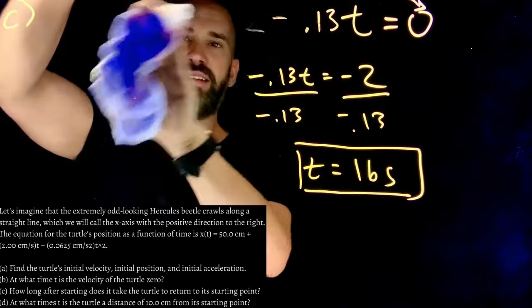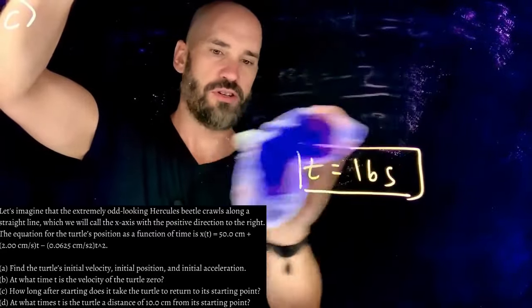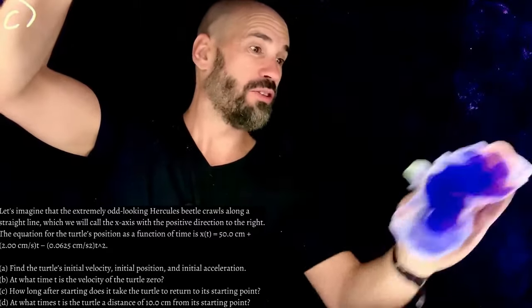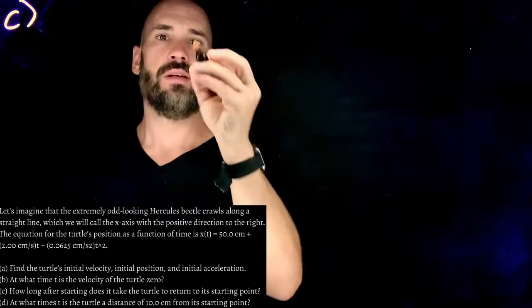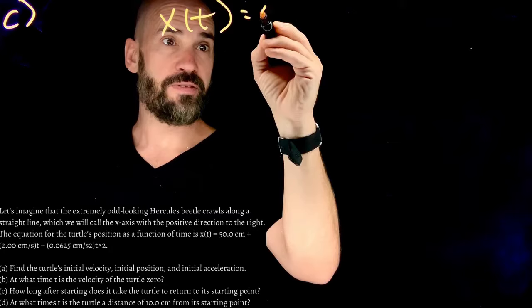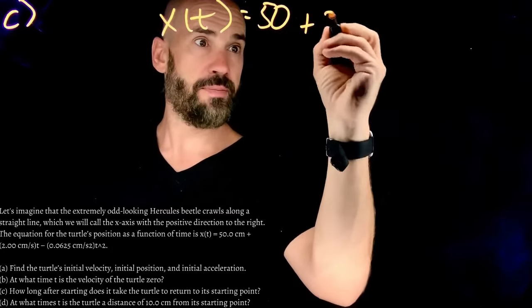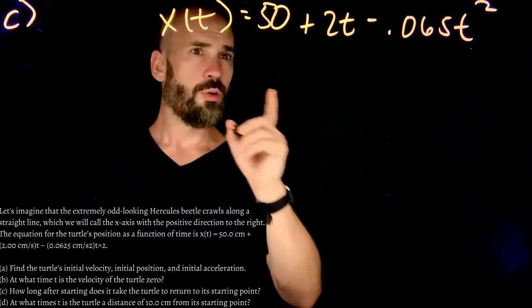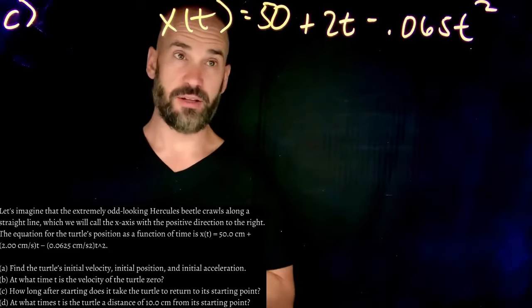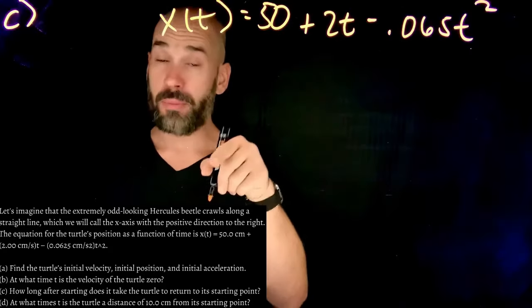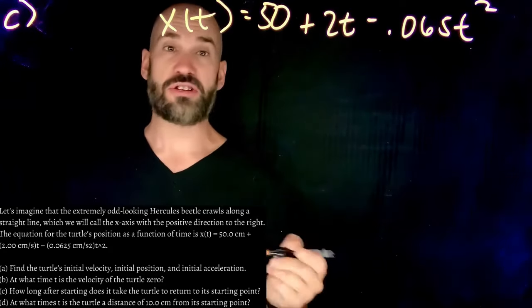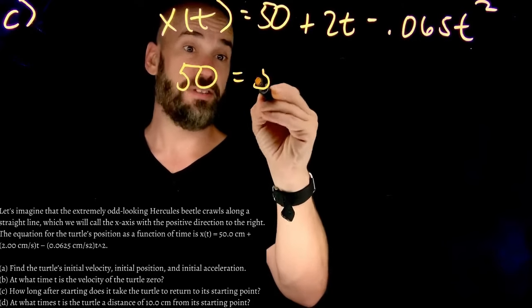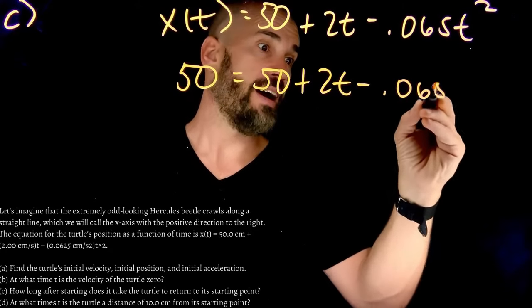So of the three functions, what are we talking about here? Are we talking about the position, velocity, or acceleration function? Well, it wants to know when it's returning to the starting point. So that's a position. So we want to go back to our position function. So x of t was 50 plus 2t minus 0.065 t squared. So when, at what time, is this guy going to return back to its starting point? Well, what is its starting point? Where did it start? Remember, from part A, we said that its initial position was 50. So the question is essentially asking, at what time does the position equal 50 again?